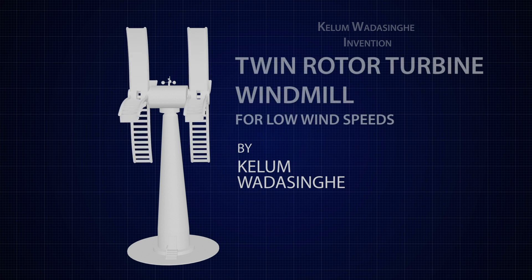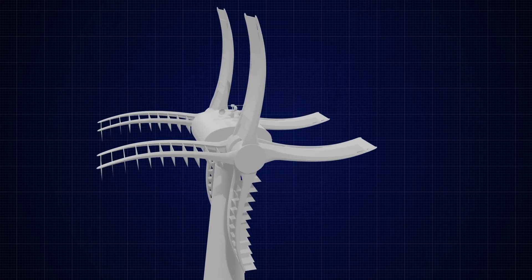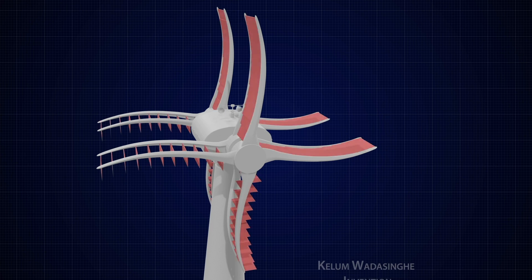It is a twin rotor wind turbine. In this design, the blades of the mill consist of lures.